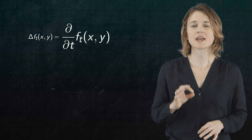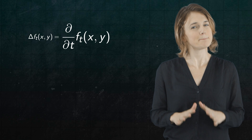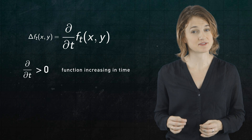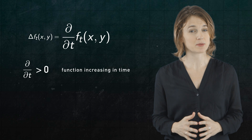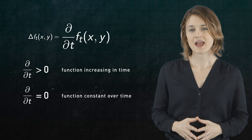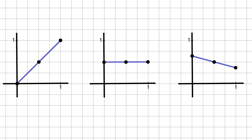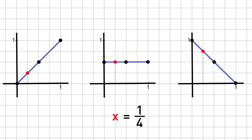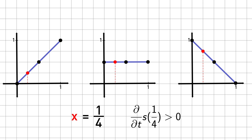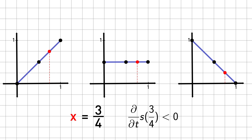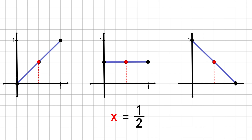Now, the right side of the heat equation: it's the derivative with respect to time of our function f. Basically, it tells us how the function is changing over time at a specific point. The time derivative is a big positive number if the function is rapidly increasing, a small positive number if it's slightly increasing, and zero if it isn't changing. A negative time derivative means it's decreasing. For example, let's look at this function, which is changing in time like a seesaw pivoting on a central point. At x = 1/4, the value of the function is increasing, so the time derivative at x = 1/4 is positive. At x = 3/4, the value of the function is decreasing, so the time derivative there is negative. And at x = 1/2, the value of the function doesn't change over time, so the time derivative at x = 1/2 is zero.